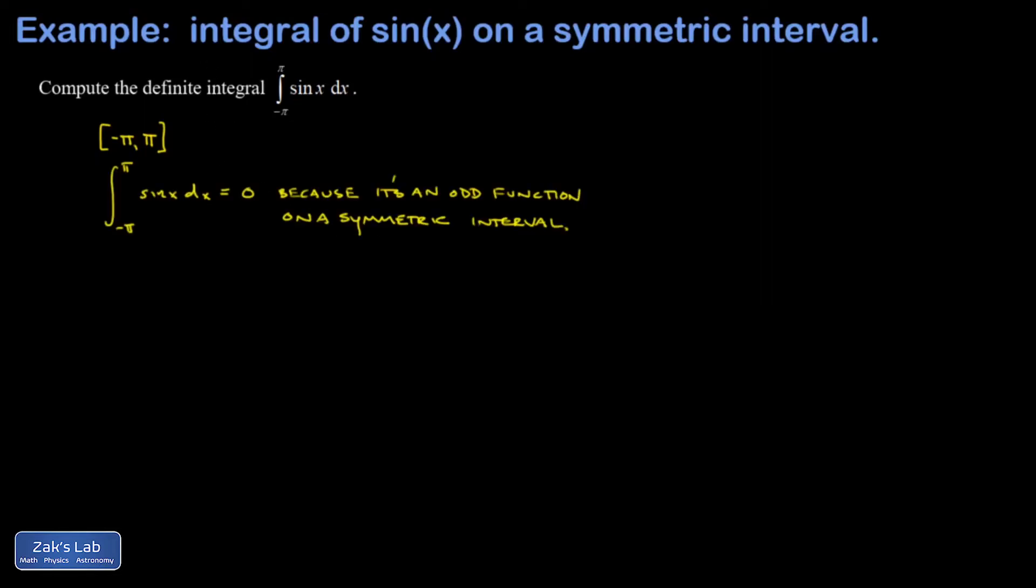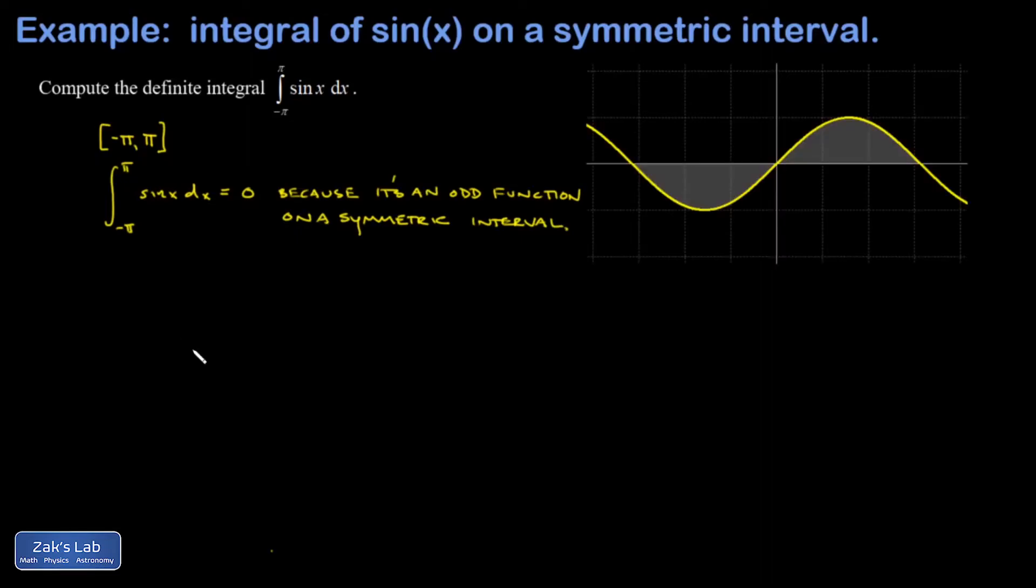So just to illustrate why this is true, I'll pop in a graph of the sine function and shade in the area represented by this integral. There's the graph of the sine function with the area shaded from negative pi to pi. I can see by symmetry that this definitely comes out to be zero because area under the x-axis counts as negative and area above the x-axis counts as positive.